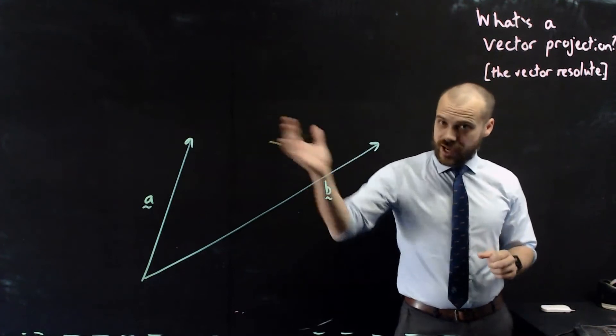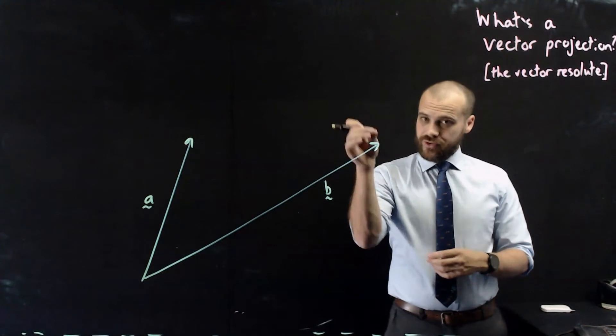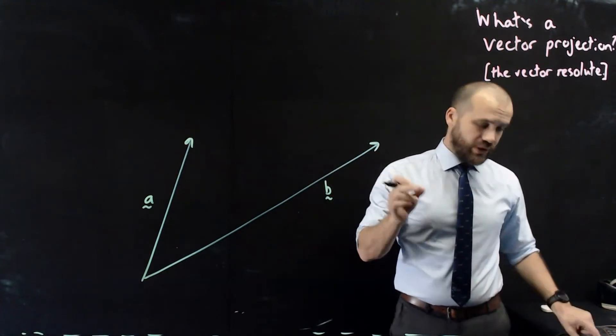So here are my two vectors, A and B. Now I'm going to do a vector projection. That means I'm going to project one vector onto another vector. And for that, I'm going to need a torch.